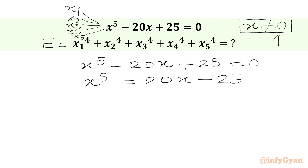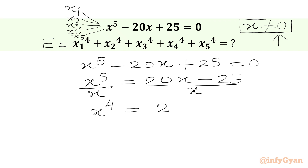Now x cannot be 0, so we can divide both sides by x. So x power 5 over x will give us x power 4, and the RHS will be 20 minus 25 over x.